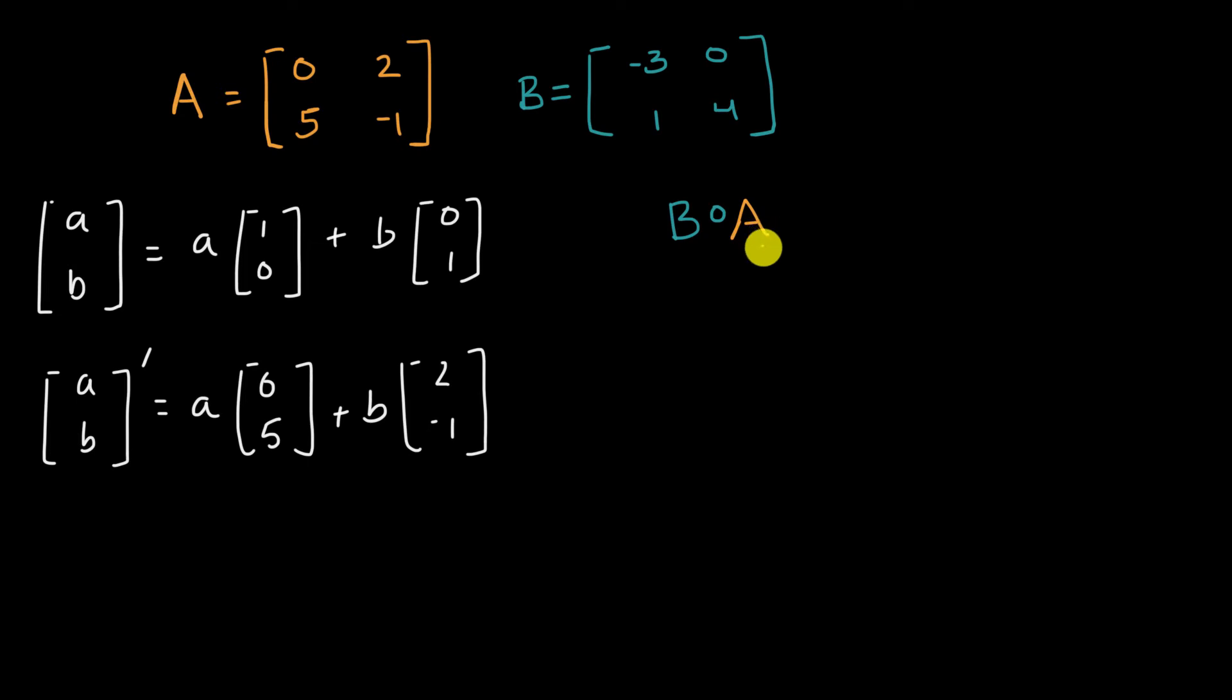All right. Well, what would happen is we would first transform any point using these two vectors, the zero five, the two negative one, because that's the first transformation we do. And then we would apply this transformation to whatever the resulting vector is. Now that seems pretty involved, and we don't want to write it in terms of As or Bs, we just want to write it in terms of a transformation matrix. So one way to think about it is